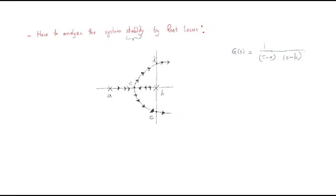Here, A and B are the poles, C is the touching point, and D is the intersection of the imaginary axis. The system stability depends only on the poles — specifically, the pole locations and their directions. From the root locus, we can identify several regions: AC is one region, BC is one region, and CD is one region. These regions will decide the system stability.